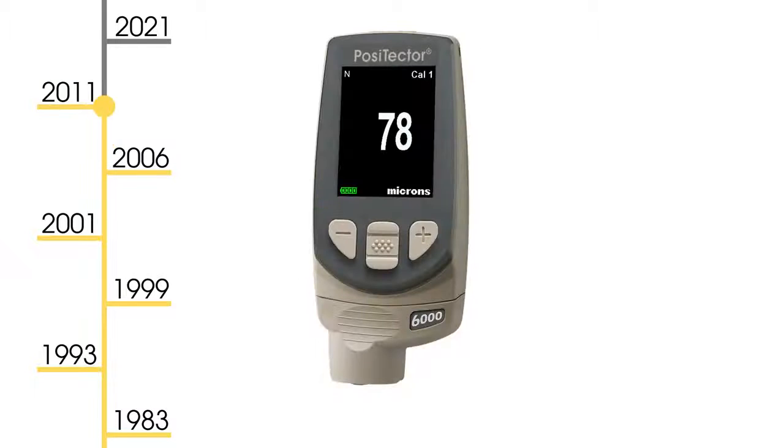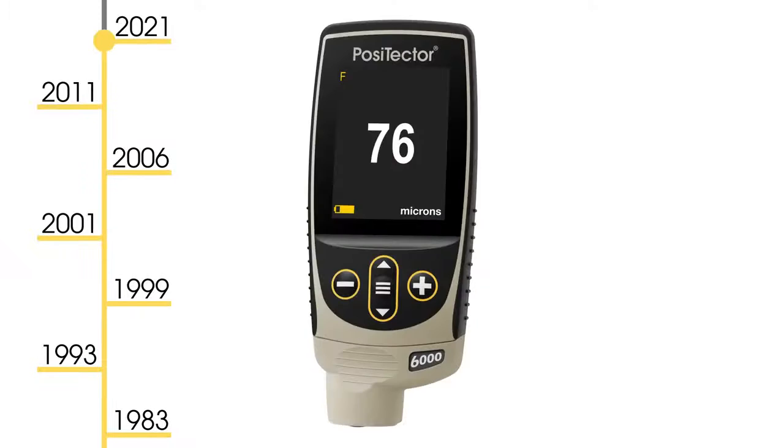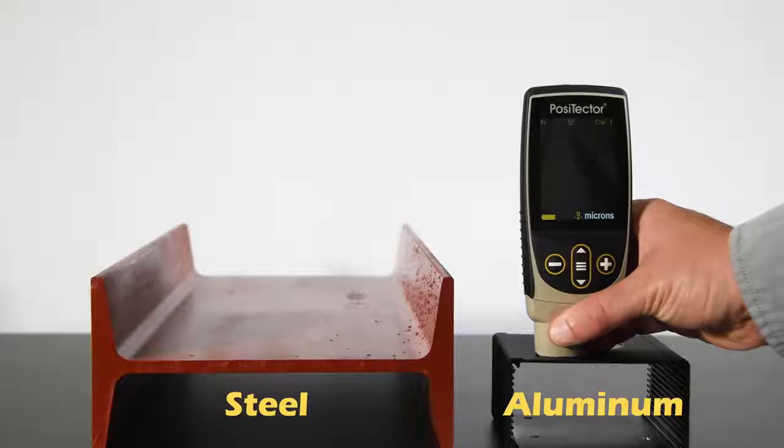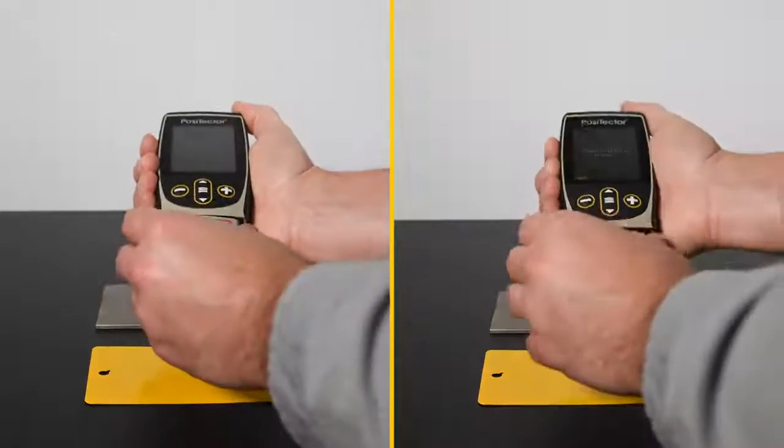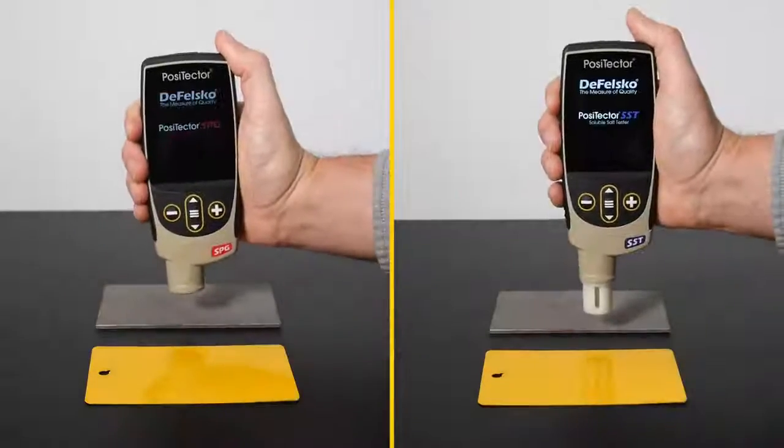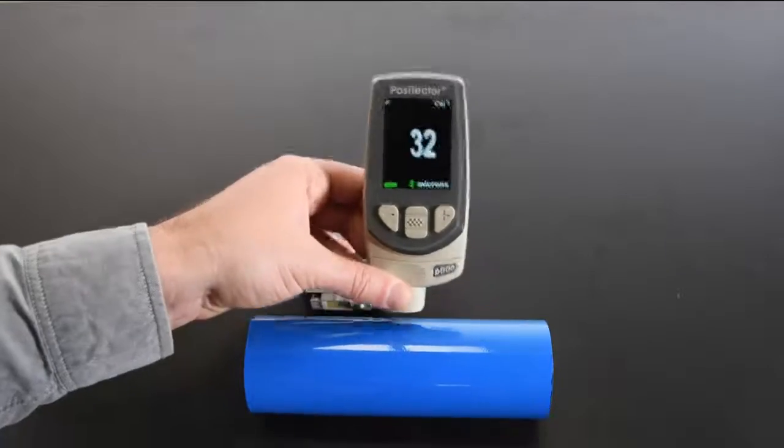Over five generations, Positector instruments have pioneered industry-changing technologies such as automatic ferrous non-ferrous switching, scanning, and complete probe interchangeability. The new Positector gauge body builds on this legacy.